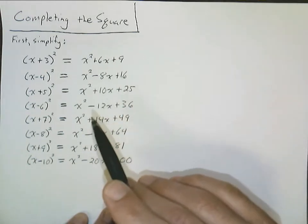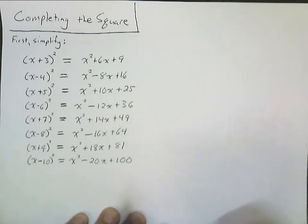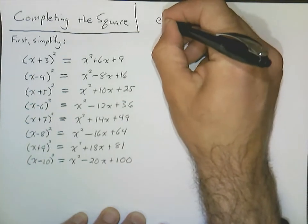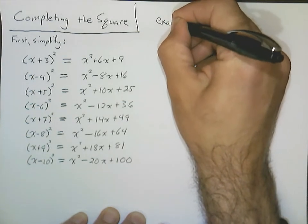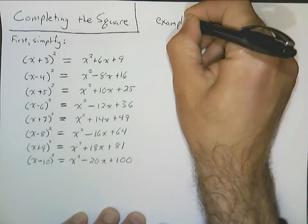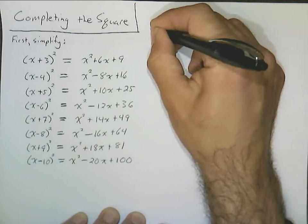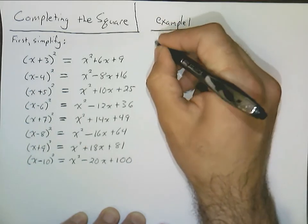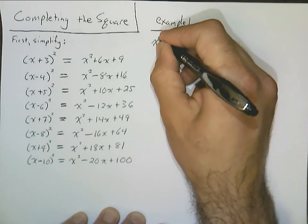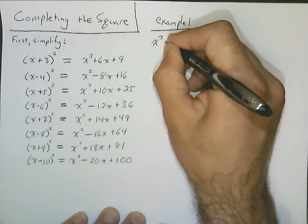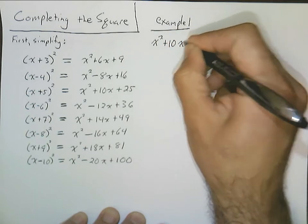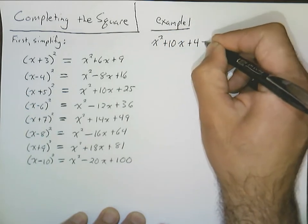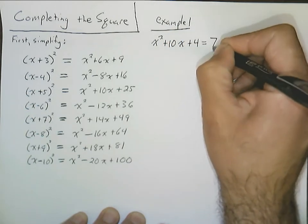Once you understand that pattern in these expressions, everything becomes pretty simple. So let me show you how we're going to apply this pattern to an example problem — we'll call this Example 1. The equation we're going to try to solve is x squared plus 10x plus 4 equals 7.